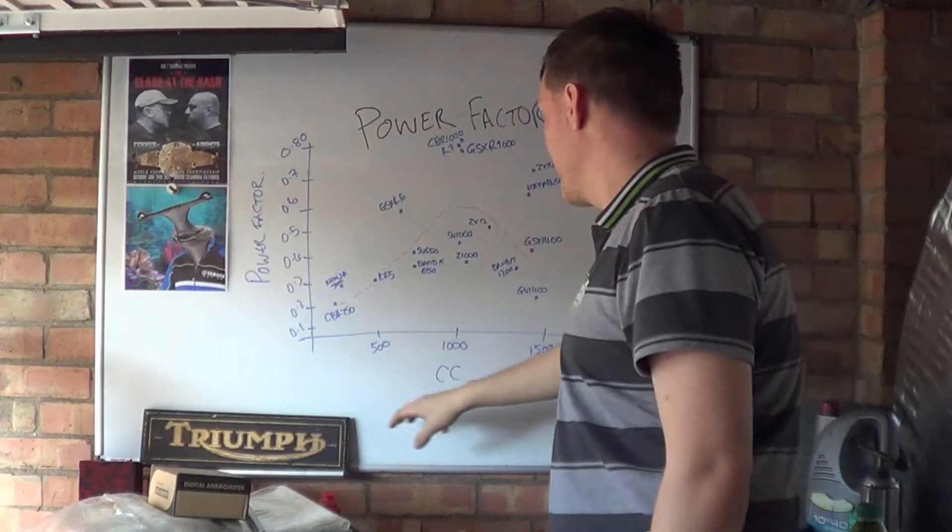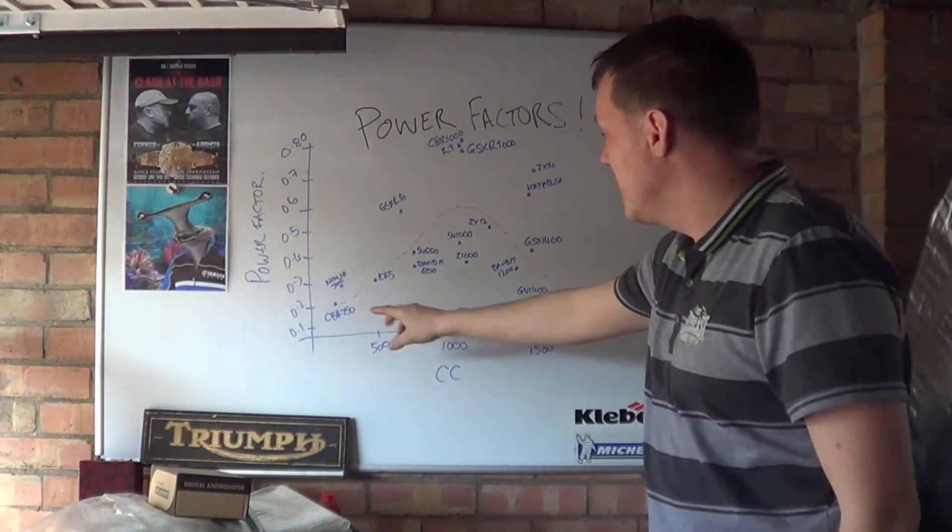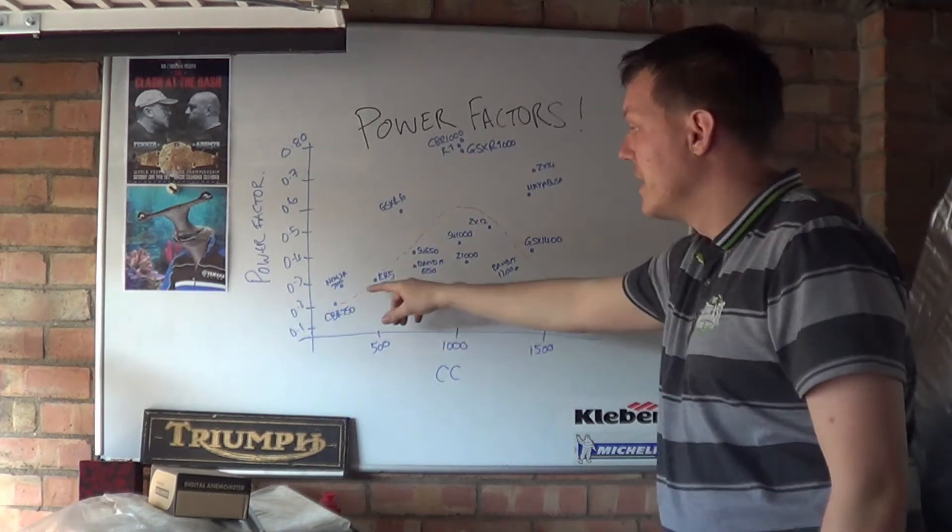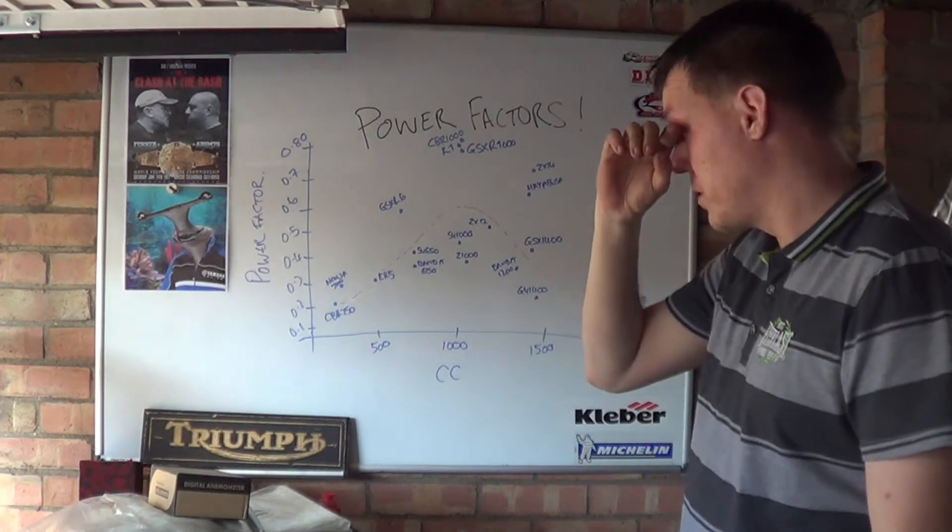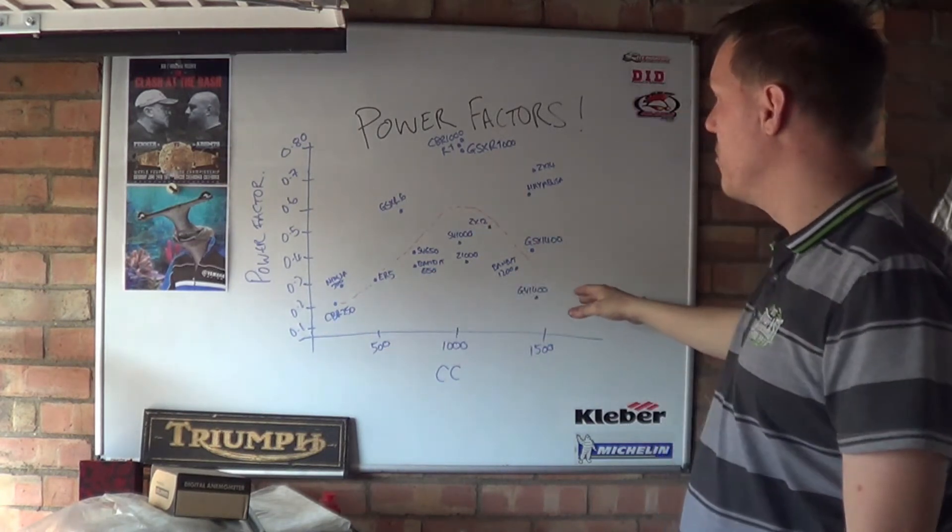And on this side we have power factors, on this side we have CC. So as you can see they're all scattered everywhere. Obviously CC goes up this way. And this is the average line, basically. When I plotted it on Excel, it gave me an average line. So you can see there's this hump to it.